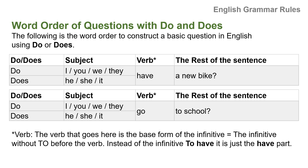What is the word order of questions with do and does? The following is the word order to construct a basic question in English using do or does. For first person singular and plural, second person singular and plural, and third person plural: Do I, do you, do we, do they have a new bike?